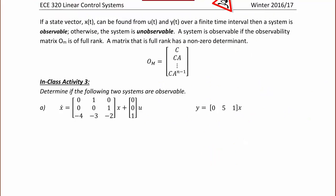Just as we could determine whether a system was controllable by checking if it was full rank (non-zero determinant), we can do the same to determine if a system is observable. If a state vector x(t) can be found from u(t) and y(t) over a finite time interval, then the system is observable; otherwise it is unobservable. A system is observable if the observability matrix O_m is full rank. We form the observability matrix using C, C*A, C*A², up to n rows.